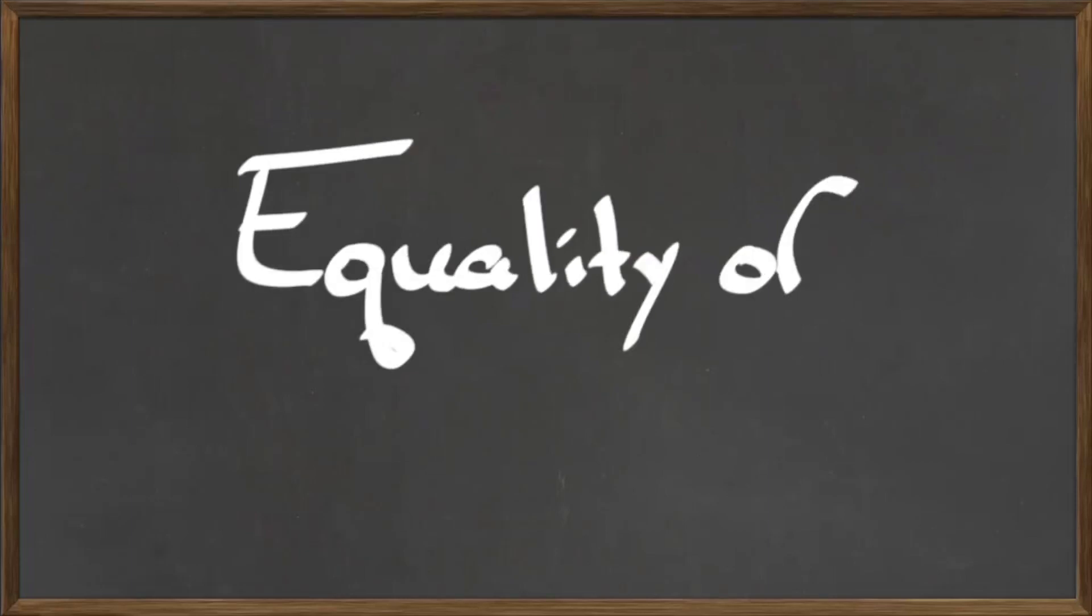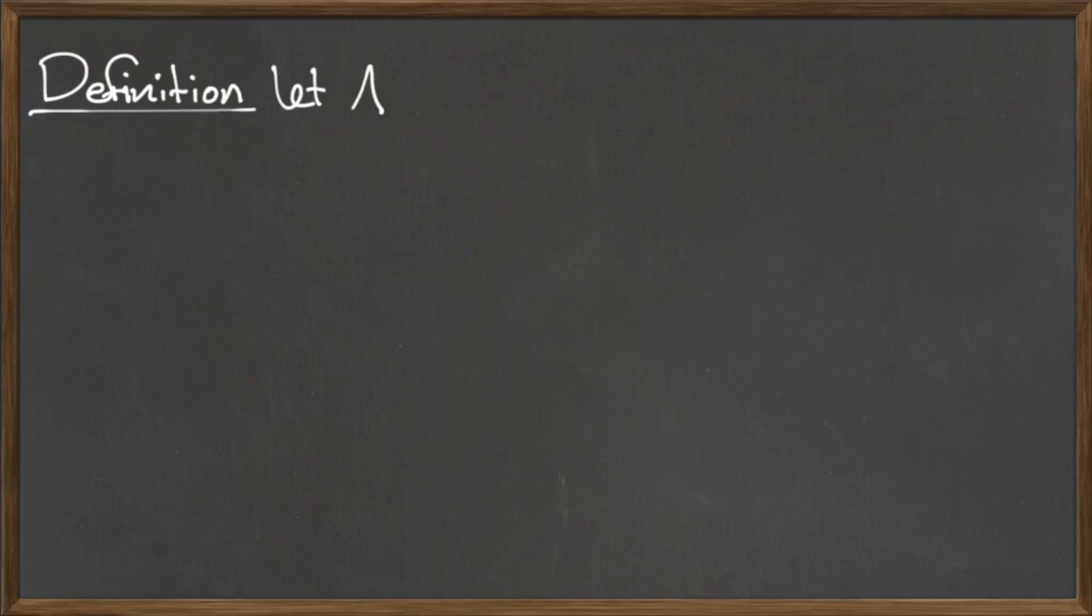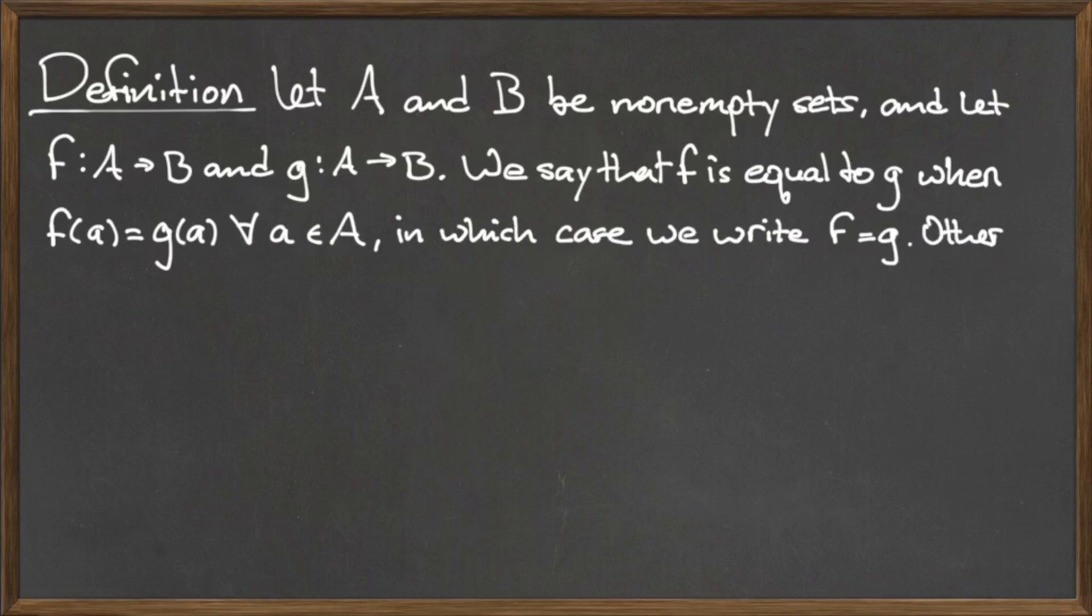In this video, we will discuss the equality of functions. Let A and B be two non-empty sets, and let f and g be two functions with the same domain A and the same codomain B. We say that f is equal to g when f(a) is equal to g(a) for all elements a in the domain A, in which case we write f = g. Otherwise, we write f ≠ g.